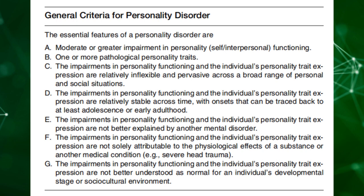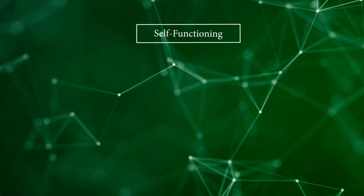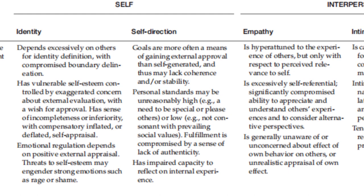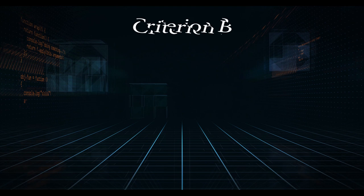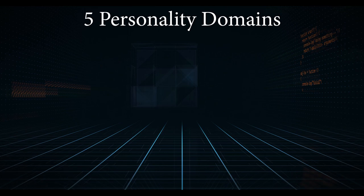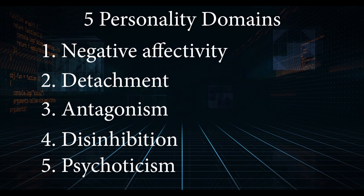Criterion A refers to the individual's level of personality functioning, divided into two categories: self-functioning and interpersonal functioning. Interpersonal functioning is further divided into empathy and intimacy, while self-functioning is further divided into identity and self-direction. The level of impairment in each of these categories is measured using the Levels of Personality Functioning Scale, or the LFPS. Criterion B contains five personality domains and 25 personality facets, or pathological personality traits, arranged in the domains of negative affectivity, detachment, antagonism, disinhibition, and psychoticism. Only some of these will apply since we are looking at antisocial personality disorder (APD) and narcissistic personality disorder (NPD).